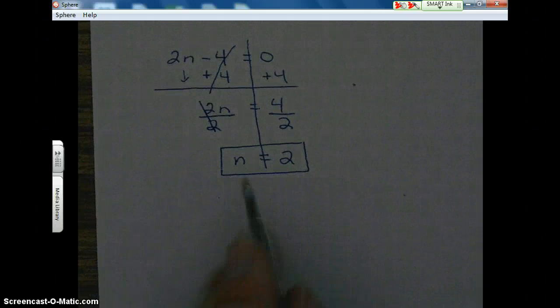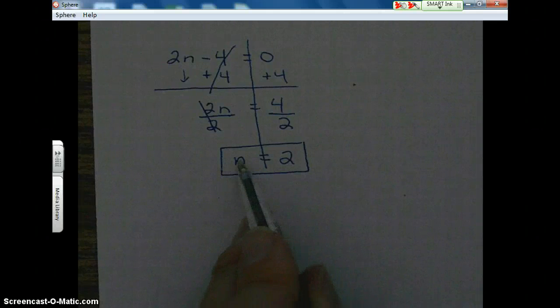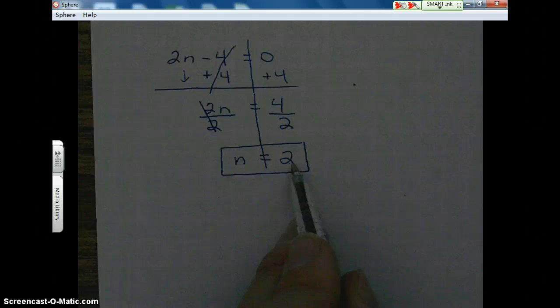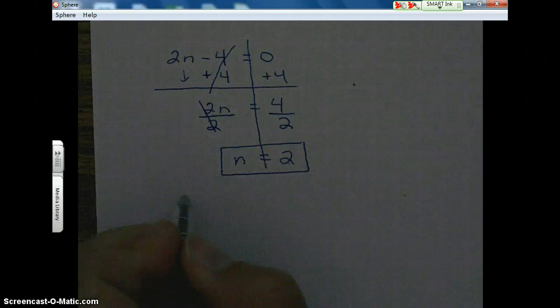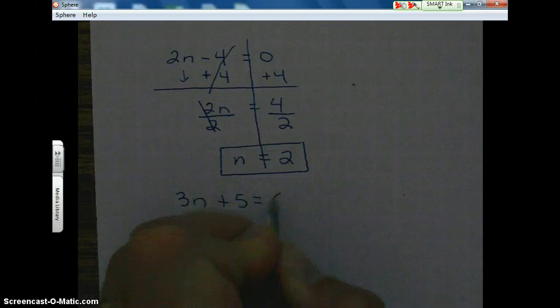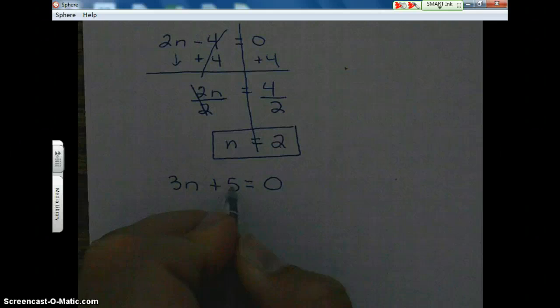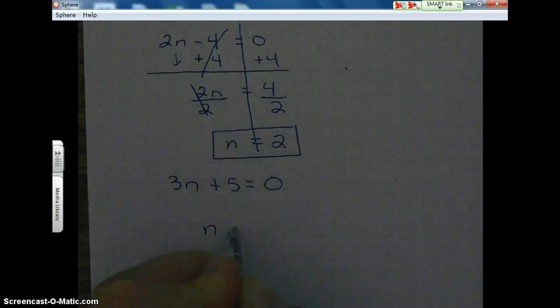Again, when you see letters other than x, know that this represents your x-intercept, two comma zero. So okay, let's do the other factor. And we're going to subtract five, divide by three. We're going to end up with negative five thirds.